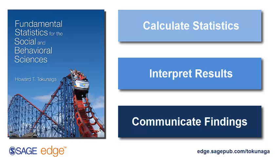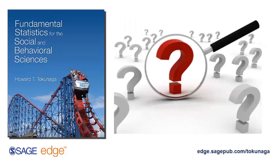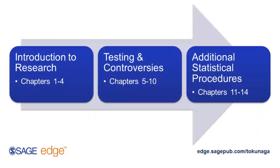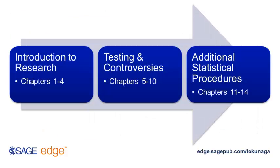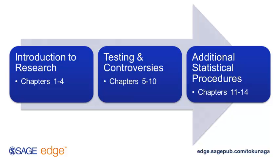This applied approach takes the mystery out of statistics and better prepares students for doing their own research, graduate work, or perhaps their first career. This book has 14 chapters divided into three categories. Chapters 1 through 4 introduce students to the research process. Chapters 5 through 10 discuss the process of conducting research and controversies within that process. And chapters 11 through 14 focus on additional statistical procedures. For a detailed table of contents, visit sagepub.com.